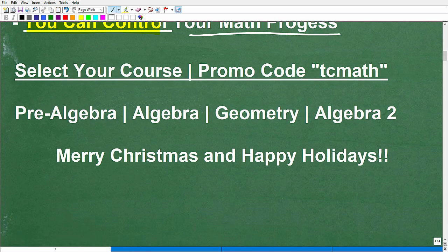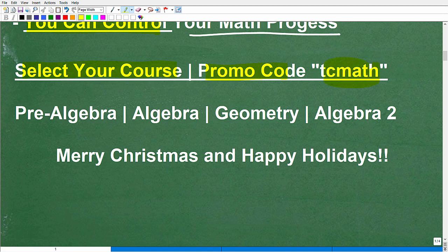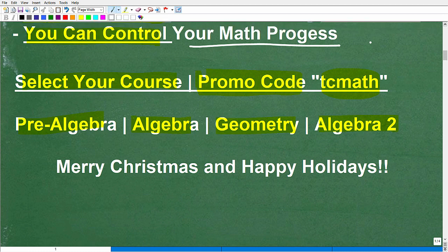And with that being said, if you just go to the description, here's how it's going to work. You're going to go ahead and select your course. The promo code for this will be TCMATH. So the courses are Pre-Algebra, Algebra, Geometry, and Algebra 2, and then you'll see the directions in the description. Basically, at the checkout, you're going to select the one-year plan. There's two plans. I have a monthly subscription. Do not do that. You'll want to select that one-year plan, and then at checkout, use this TCMATH coupon code. Apply that, and then you're going to get an outstanding deal.